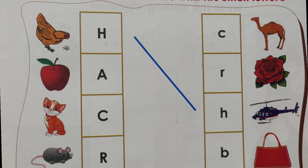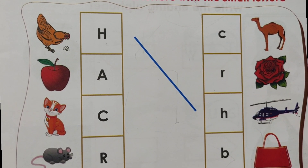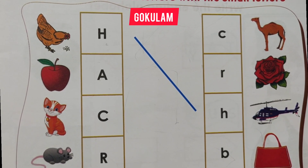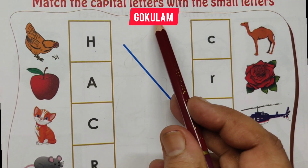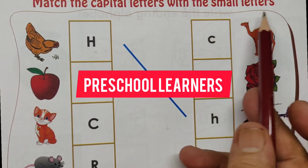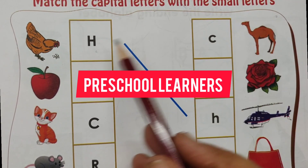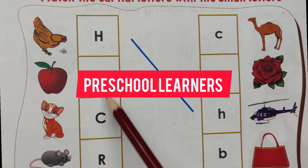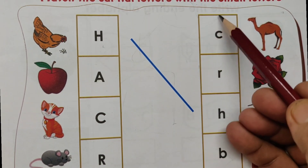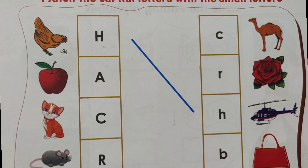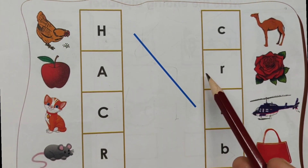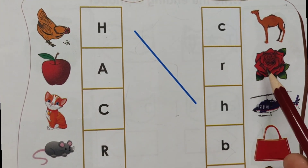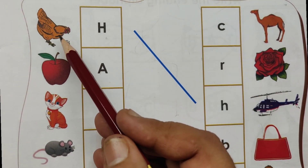Hello children, welcome to Google. This is a preschool learners worksheet activity. Match the capital letters with the small letters. Here are the capital letters, and this sign shows the small letter. You have to match the capital letters with the small letters.